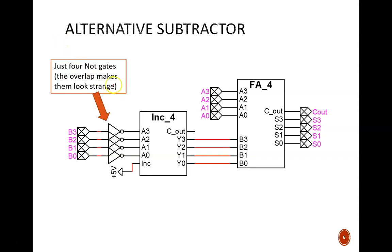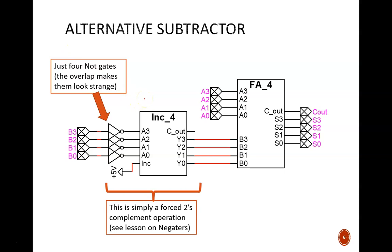First, we negate B. The 2's complement operation is achieved first with a series of NOT gates, and then with an incrementer. This negative B value is then added to A through a 4-bit adder. Voila! We now have a subtractor made from two devices that were already in our toolbox.